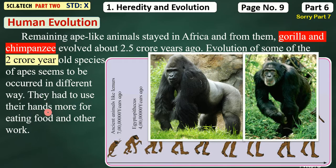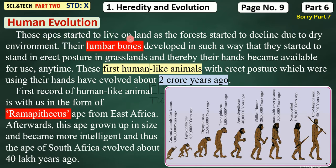They had to use their hands more for eating food and other work. Those ape-like animals started to live on land as the forest started to decline. Due to dry environment, the rainforest became deforested. They started to leave the trees and live on land as well.